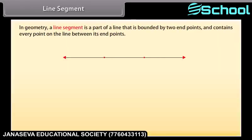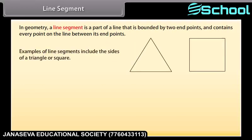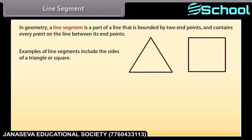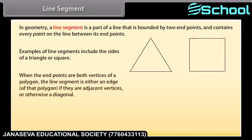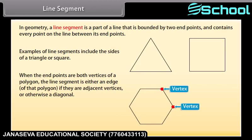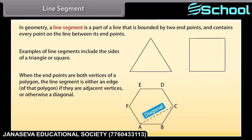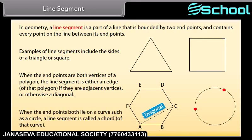In geometry, a line segment is a part of a line that is bounded by two end points and contains every point on the line between its end points. Examples of line segments include the sides of a triangle or a square. More generally, when the end points are both vertices of a polygon, the line segment is either an edge of that polygon if they are adjacent vertices, or otherwise a diagonal. When the end points both lie on a curve such as a circle, a line segment is called a chord of that curve.